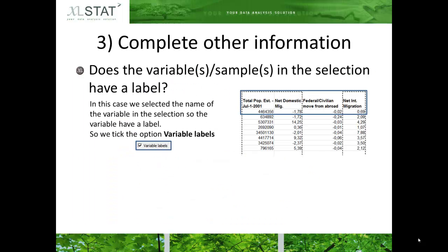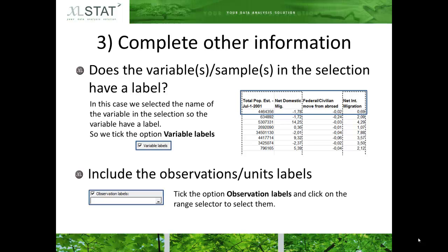You may need to fill in further information, for example the presence of variable or sample labels. In this case we have the name of variables included in the selection, so you need to tick the option variable labels. Also you may wish to include the observations or units labels — in this case tick the option observation labels and click on the range selector to select them.